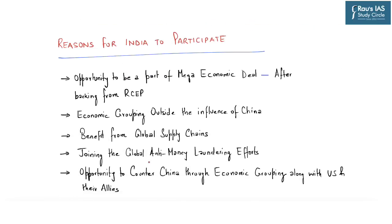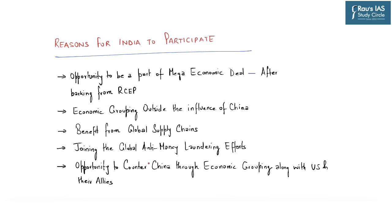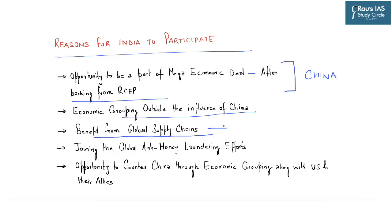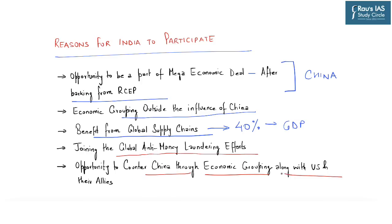Despite these concerns, the question arises as to what made India participate in this mega economic deal. It was an opportunity for India to be part of this deal after backing out from RCEP, and also the fact that RCEP was mainly dominated by China. This was an economic grouping basically outside the influence of China. India also aims to benefit from global supply chains, as the combined GDP of these countries accounts for roughly 40% of the world. India also aims to join the global anti-money laundering efforts through collaboration with these countries.